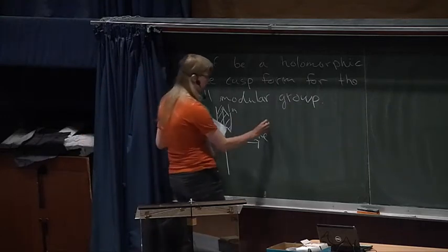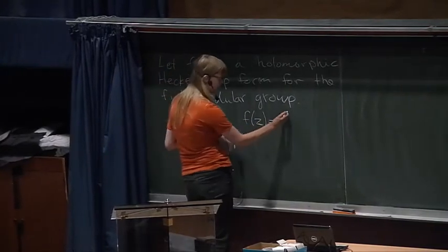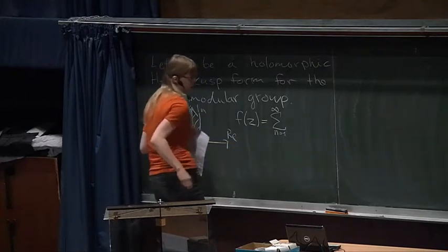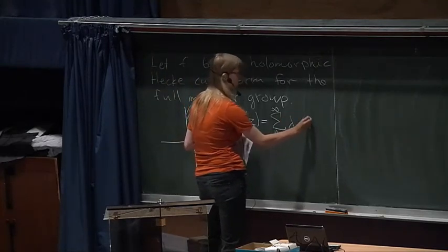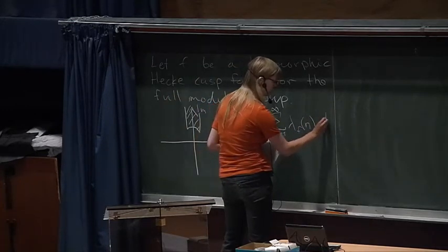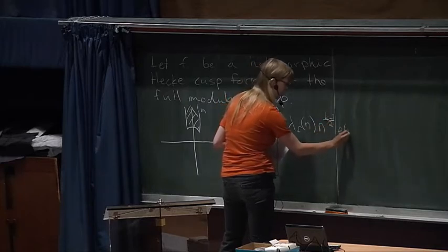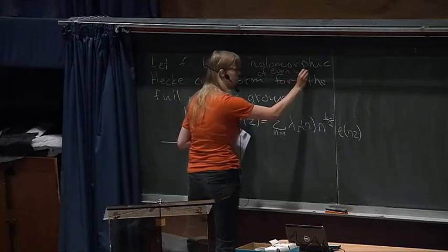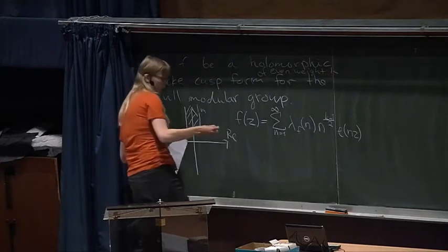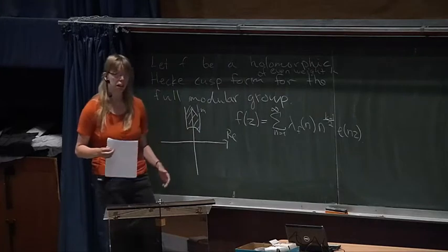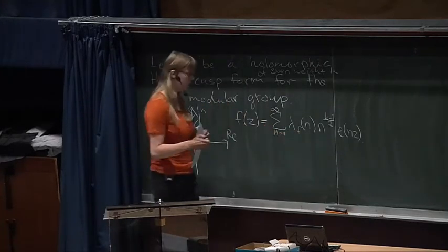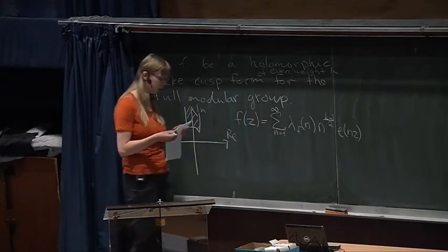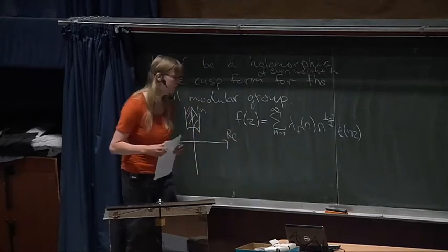The first thing we know about them is that they have a Fourier expansion. We can write F(z) as a sum from 1 to infinity — because they are cusp forms there is no zero term — and we have the Fourier coefficients λ(n), a normalizing factor n to the (k minus 1) over 2, and e(nz). So we can write the Fourier coefficient form of even weight k. Today I will be mainly interested in these Fourier coefficients λ_f(n) and their properties, because this of course defines the whole function.